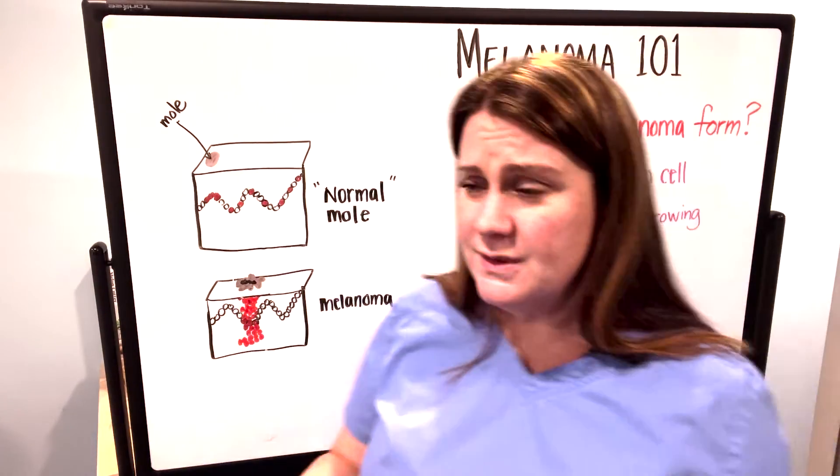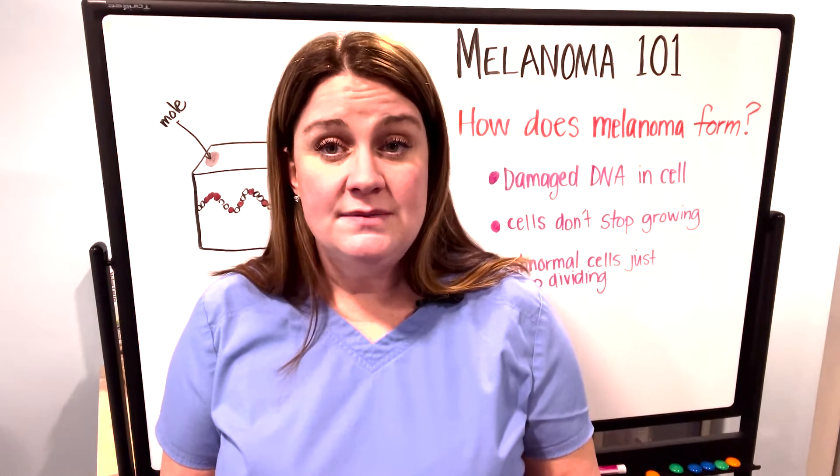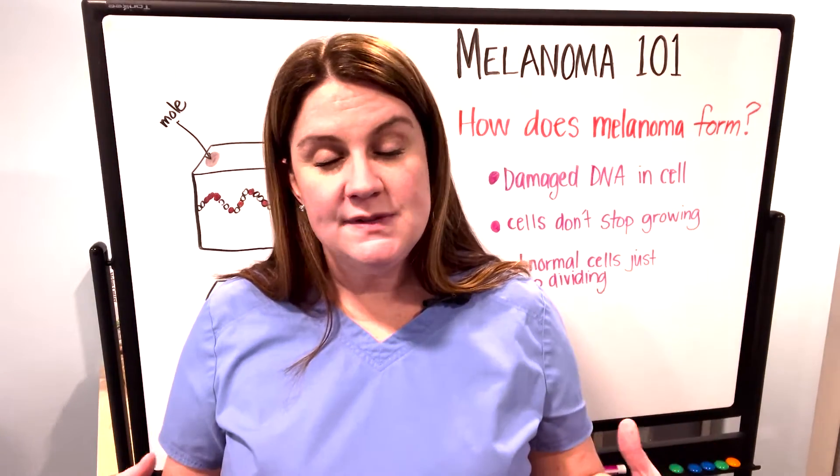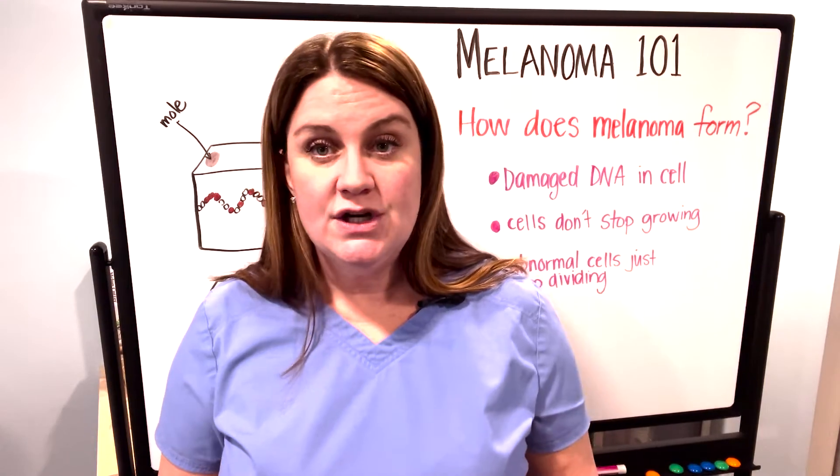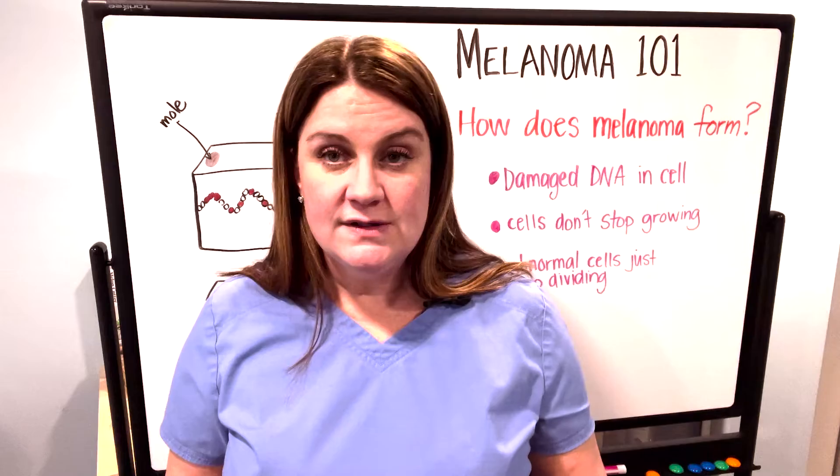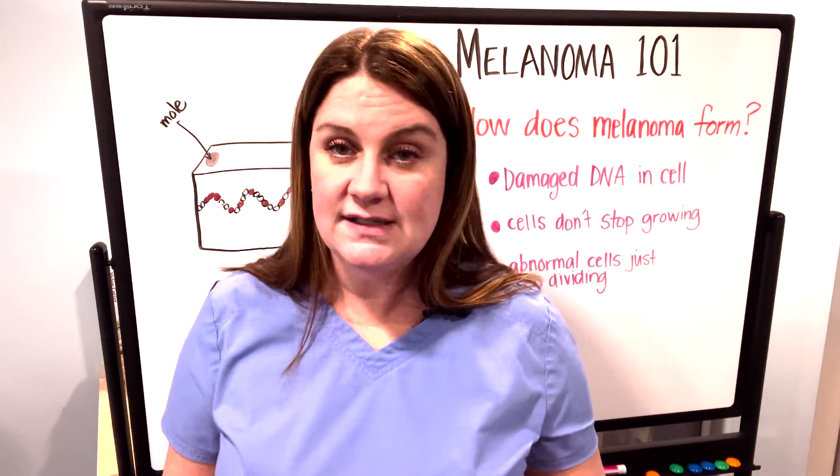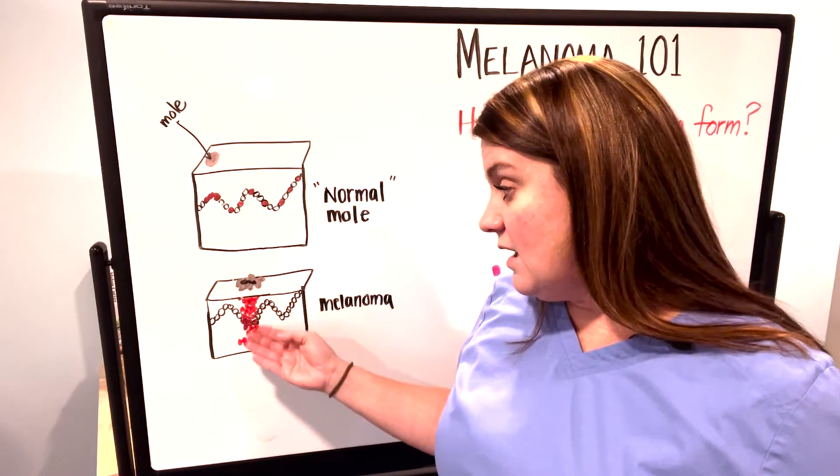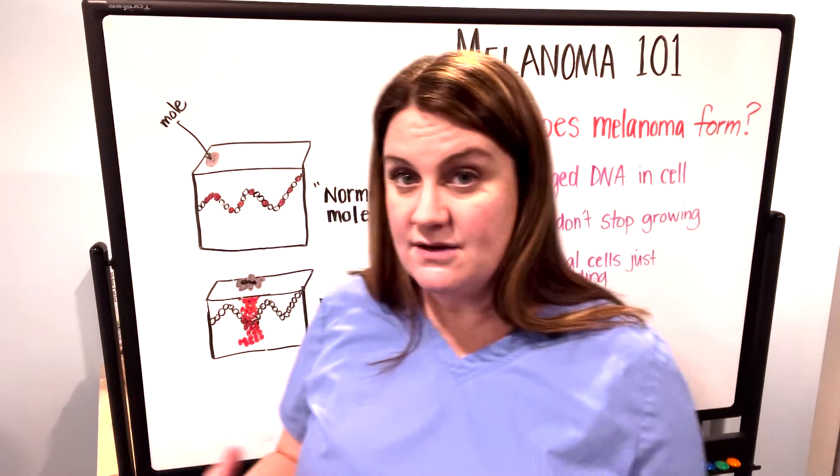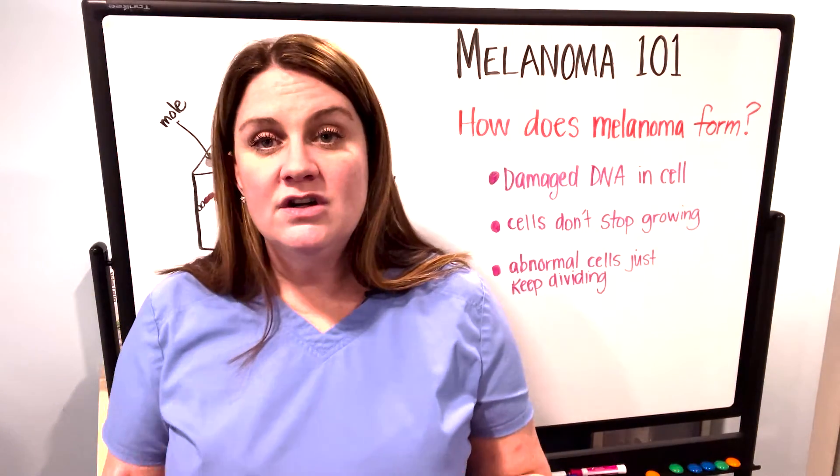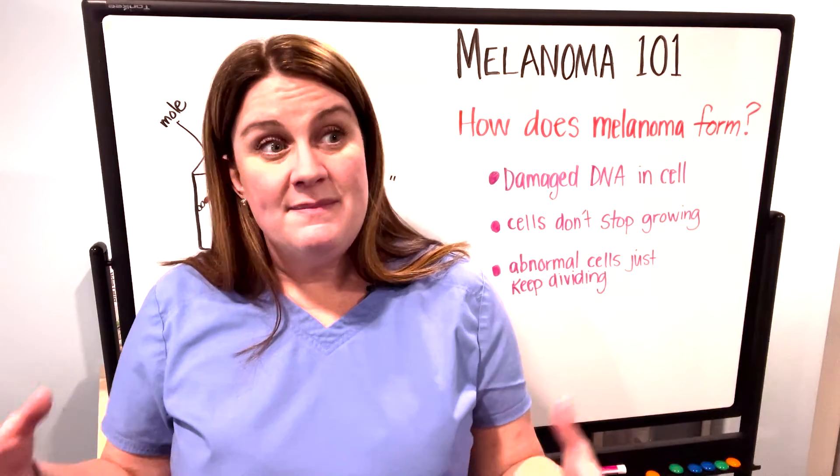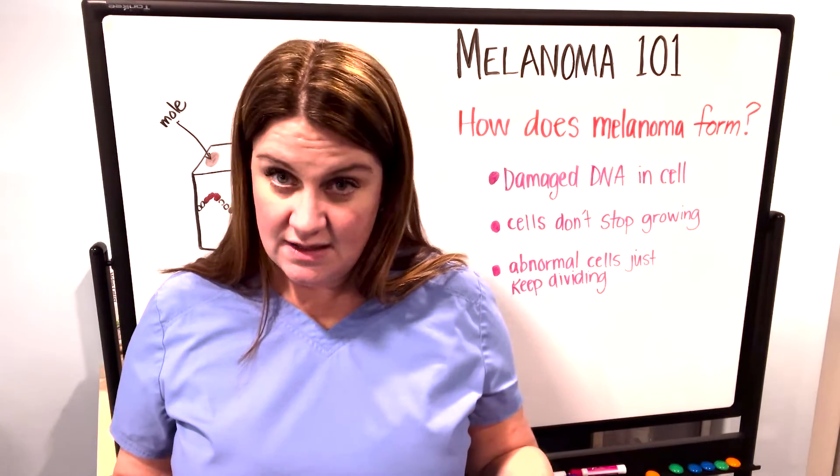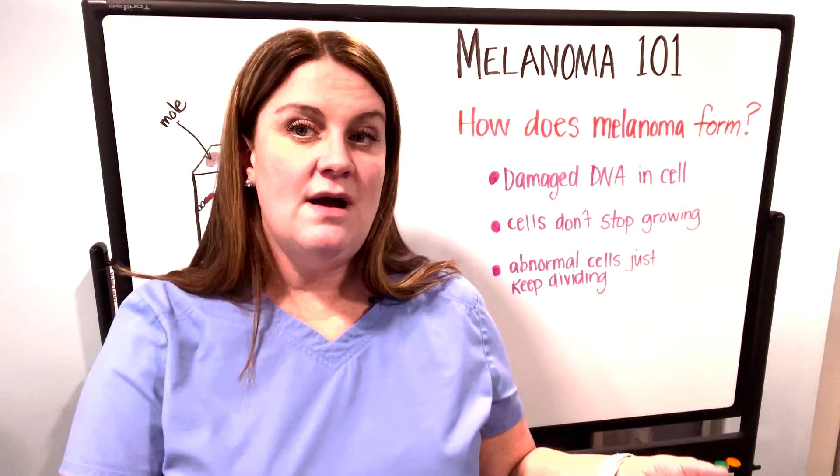The reason this is important to understand is that it frames a lot of what you see on pathology reports, in terms of mitoses, which is division of cells, and Breslow depth, which tells us how much clumping has extended down into the skin. Understanding the biology of melanoma can make all the other things make a lot more sense.